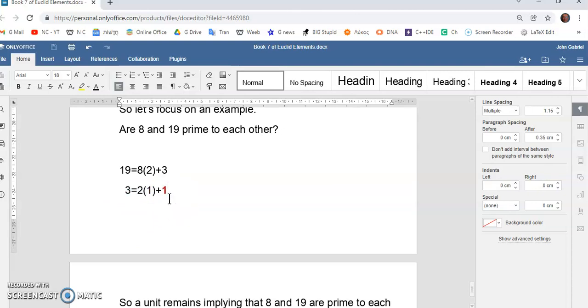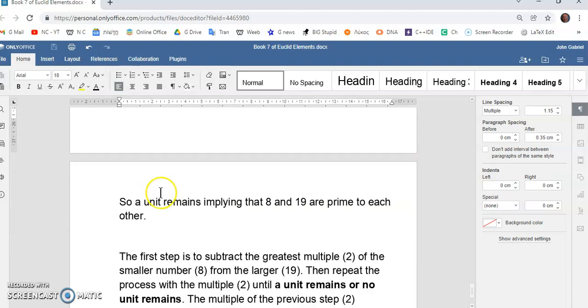In this case, the remainder is 1, meaning that 19 and 8 are prime to each other.